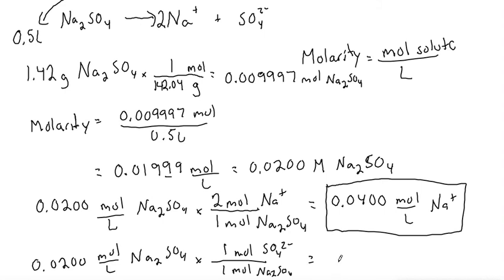So since it's one-to-one, it'll be just the original number, which is 0.0200 mole per liter of SO4 2-.